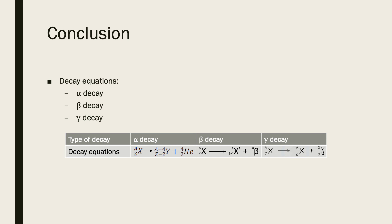In conclusion, today we learned three decay equations: alpha decay, beta decay, and gamma decay. Alpha decay releases an alpha particle which is helium. Beta decay releases a beta particle which is an electron. Gamma decay releases a gamma ray. That's all for today's lesson. I hope you have learned something and I hope to see you soon. Bye, thank you!